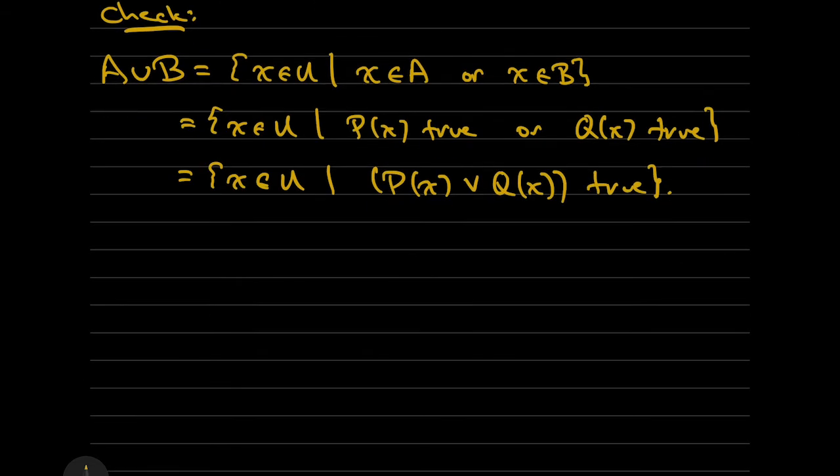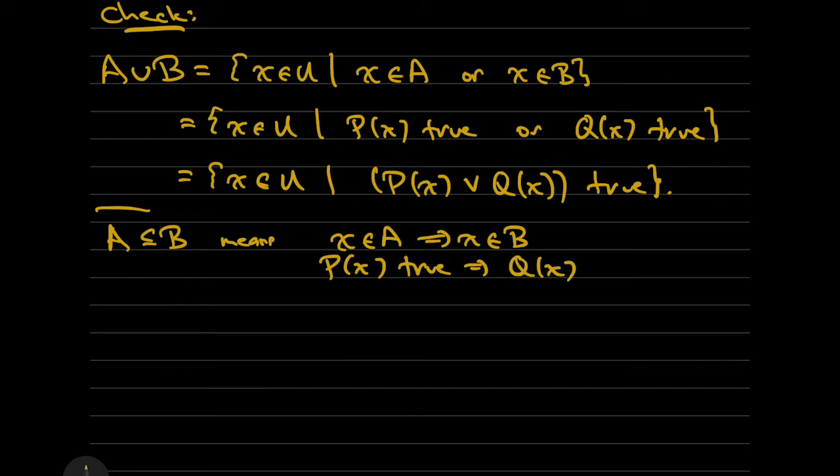We can prove a similar correspondence between intersection and AND, and with complement and NOT. Also notice that subset corresponds to implication. A as a subset of B means that X in A implies X in B, which in this language means P of X implies Q of X.